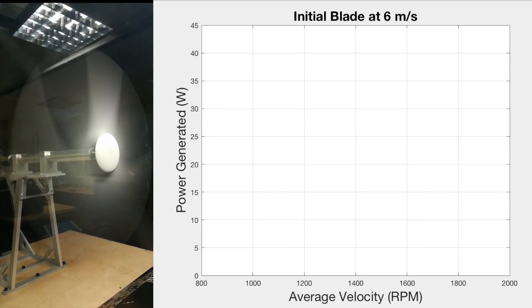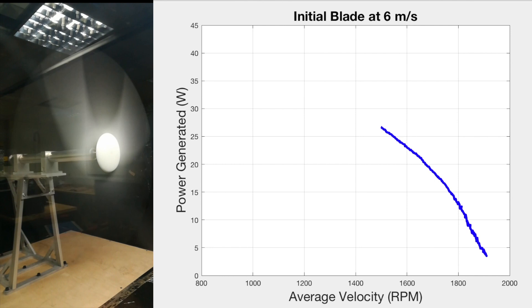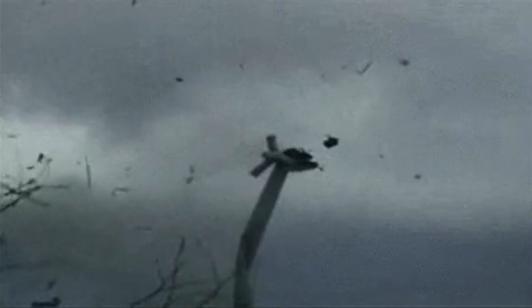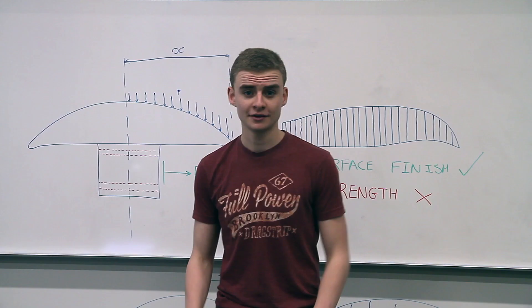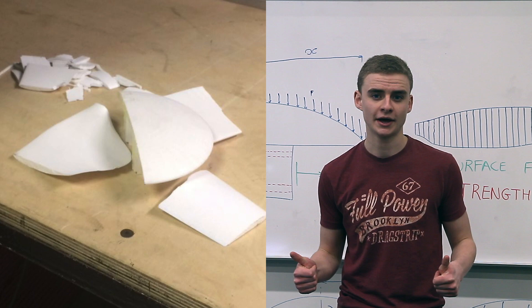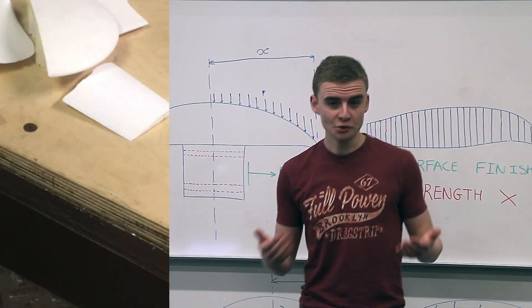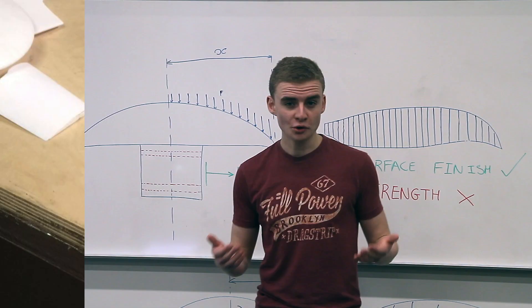The CP value recorded for the initial blade was 0.7166, and the TSR value was 6.15 — 1.15 above our predicted TSR value of 5. Unfortunately, our turbine failed. After studying the parts and our design, there are two possible reasons for the failure. Our CAD model had holes for bolts; however, these holes did not print. Under advice, we were told that glue would do the job, but it appears it didn't.